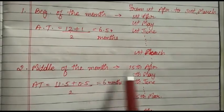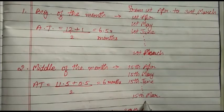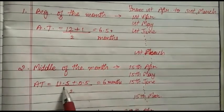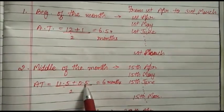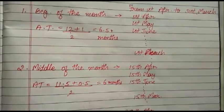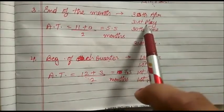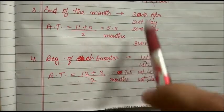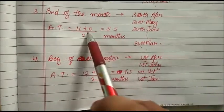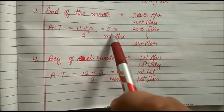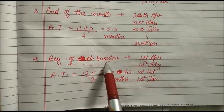If the partner withdraws money in the middle of the month — 15th April, 15th May ... 15th March — months left after 15th April = 11.5 months; months left after 15th March = 0.5 months. Average time = (11.5 + 0.5) ÷ 2 = 6 months. If the partner withdraws at the end of the month — 30th April, 31st May ... 31st March — months left after first drawing = 11; months left after last drawing = 0. Average time = (11 + 0) ÷ 2 = 5.5 months.